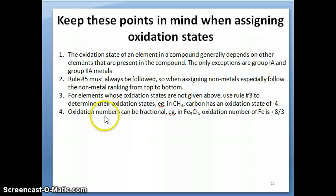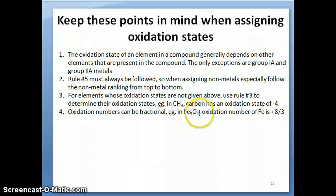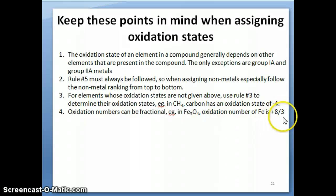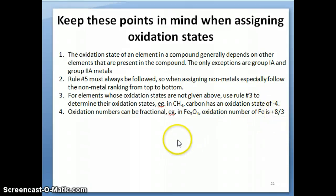Remember that oxidation number is not real — it's a concept we use to help figure out how many electrons have been transferred, specifically in covalent compounds. For example, in Fe3O4, oxygen must be negative two, so the four oxygens give negative eight total. The three iron atoms must balance that with plus eight, so each iron gets an oxidation number of plus eight over three — a fractional number — and that's okay, because this is just a counting method, not a physical reality.